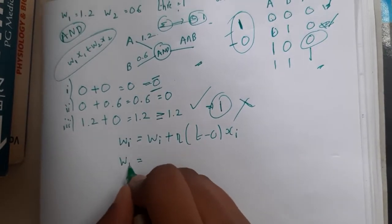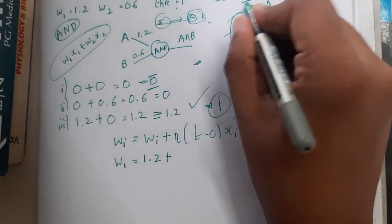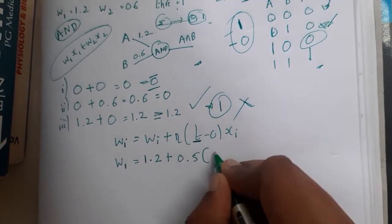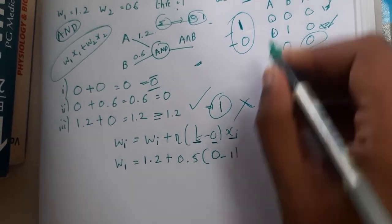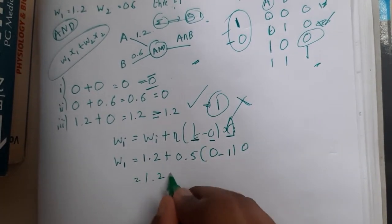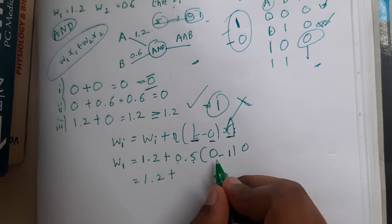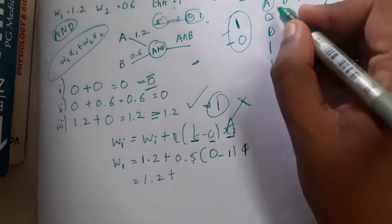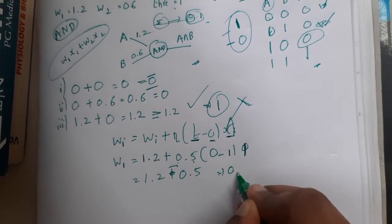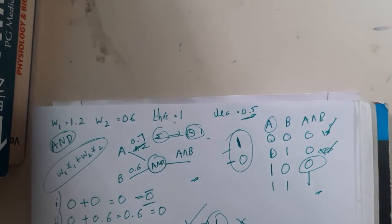Recall the weight update formula: w_i = w_i + η·(t − o)·x_i. For w1: w1 = 1.2 + 0.5×(0 − 1)×1 = 1.2 + 0.5×(−1)×1 = 1.2 − 0.5 = 0.7. So the updated w1 is 0.7.